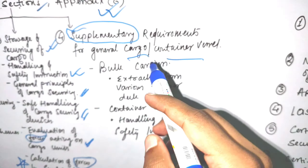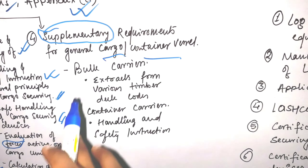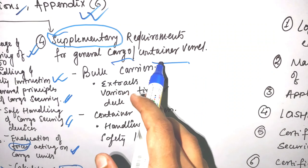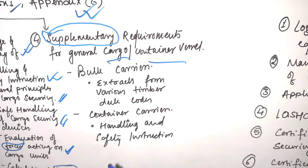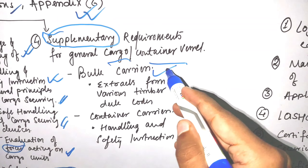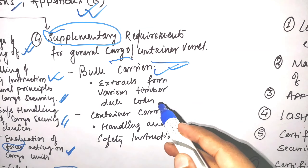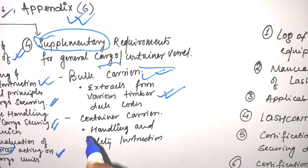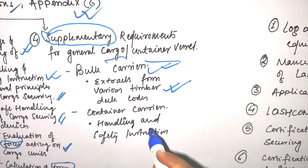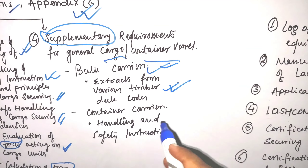The fourth section is Supplementary Requirements for General Cargo and Container Vessels. In this we have bulk carriers, where we include extracts from various timber deck codes, and container carriers, where we have handling and safety instructions. So in supplementary requirements we have only bulk carriers and container carriers.